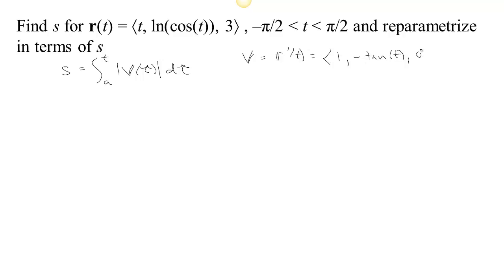And then the derivative of 3 is 0. So the speed would be the magnitude of the velocity, which would be the square root of 1 squared, which is 1, and minus tan t times minus tan t would be plus tangent squared t. Of course, there's a Pythagorean identity that says that 1 plus tangent squared is secant squared. And in this particular range of times, then the secant is positive, so this would be the absolute value of the secant, but if secant is positive, the absolute value will just be the secant of t.